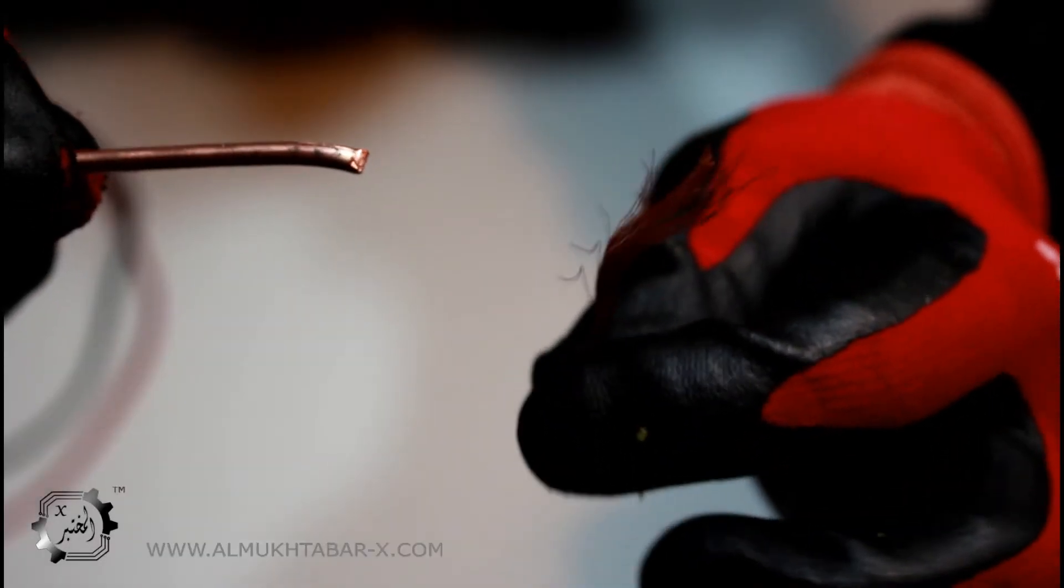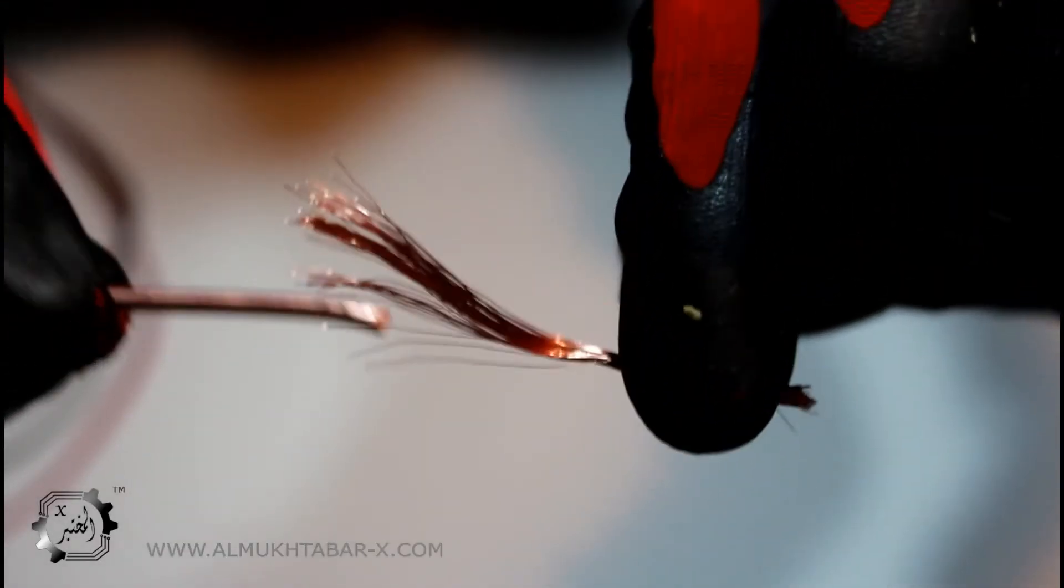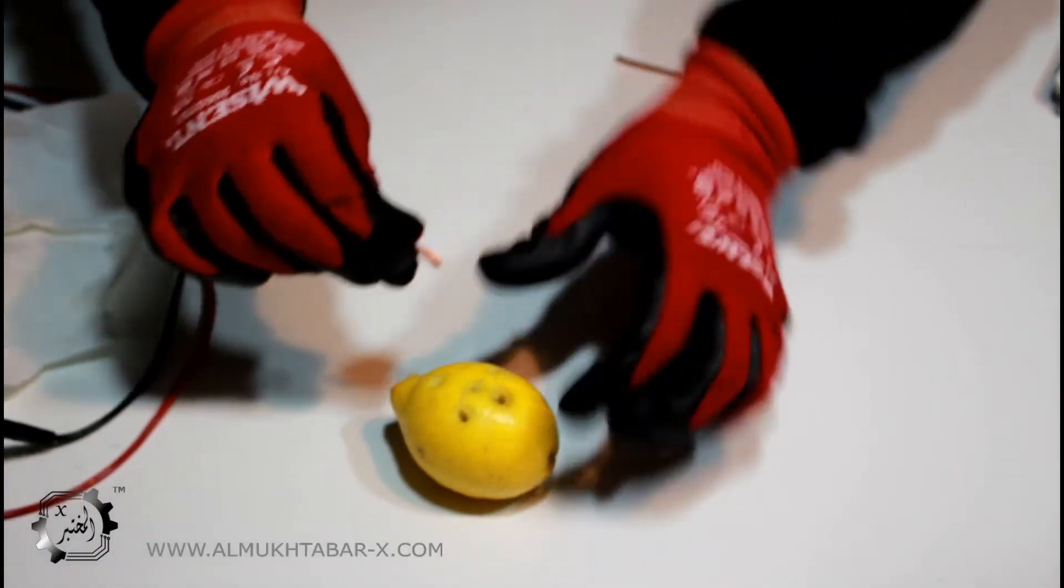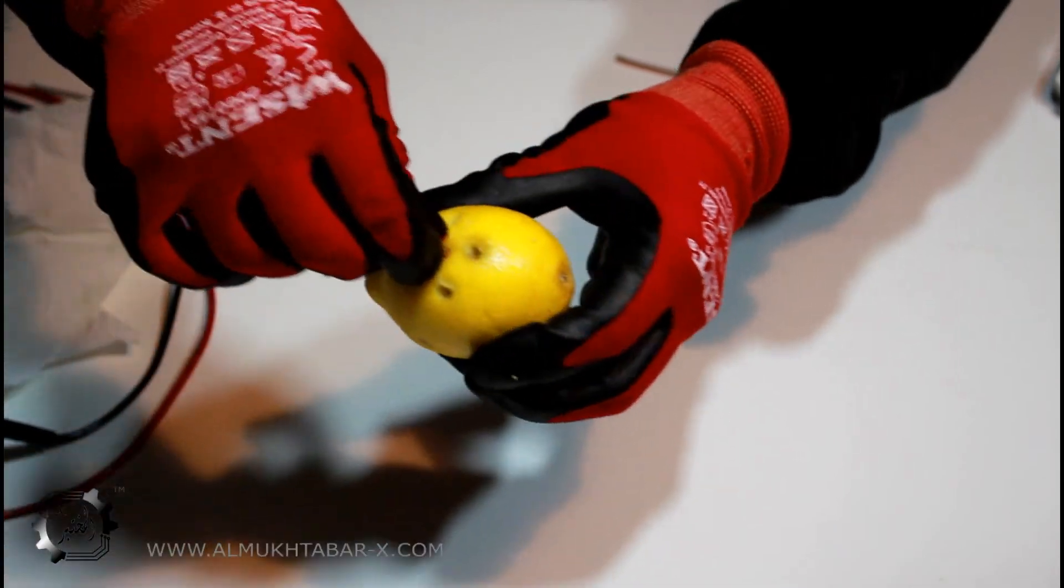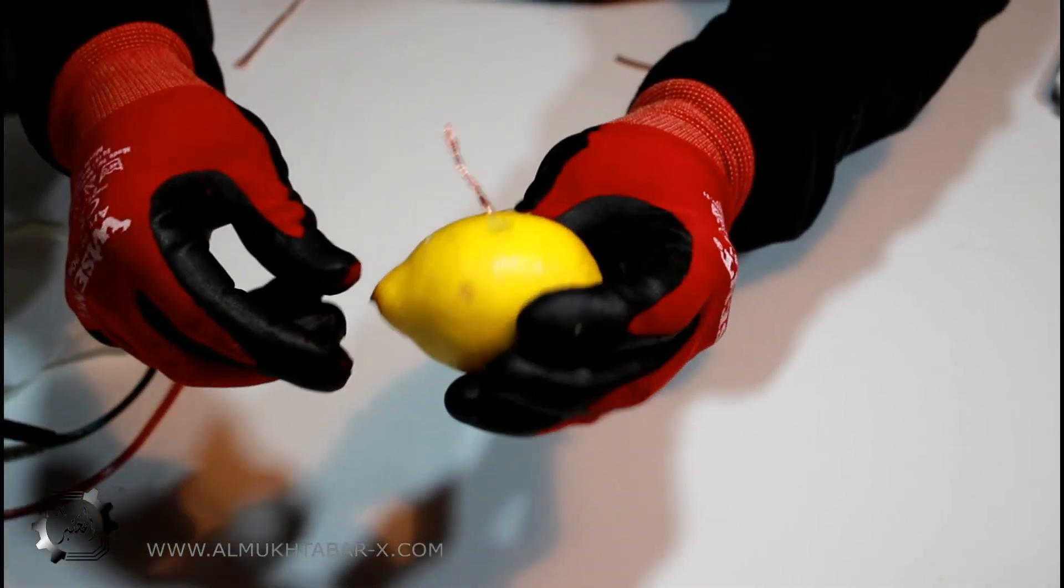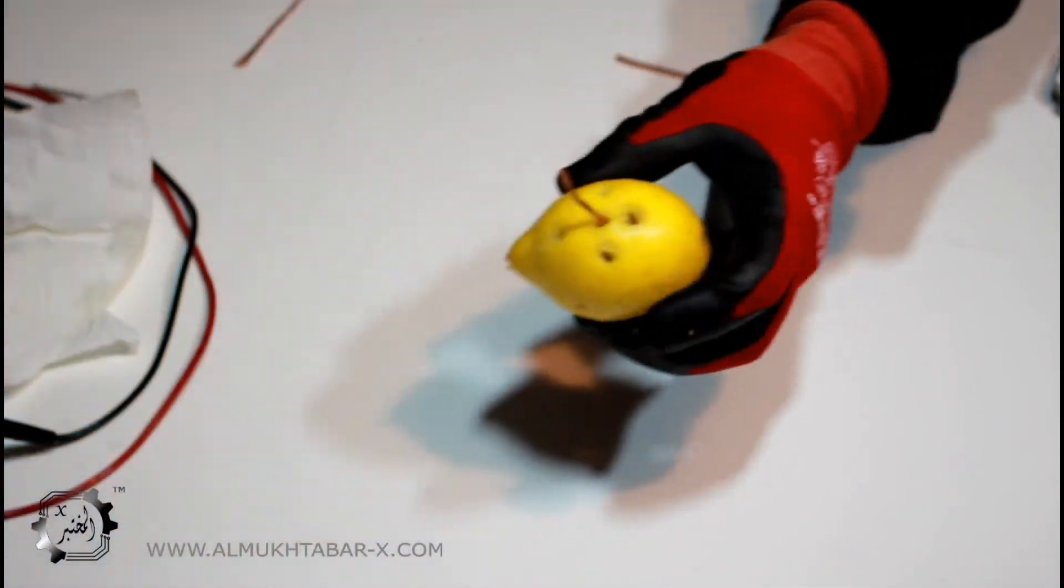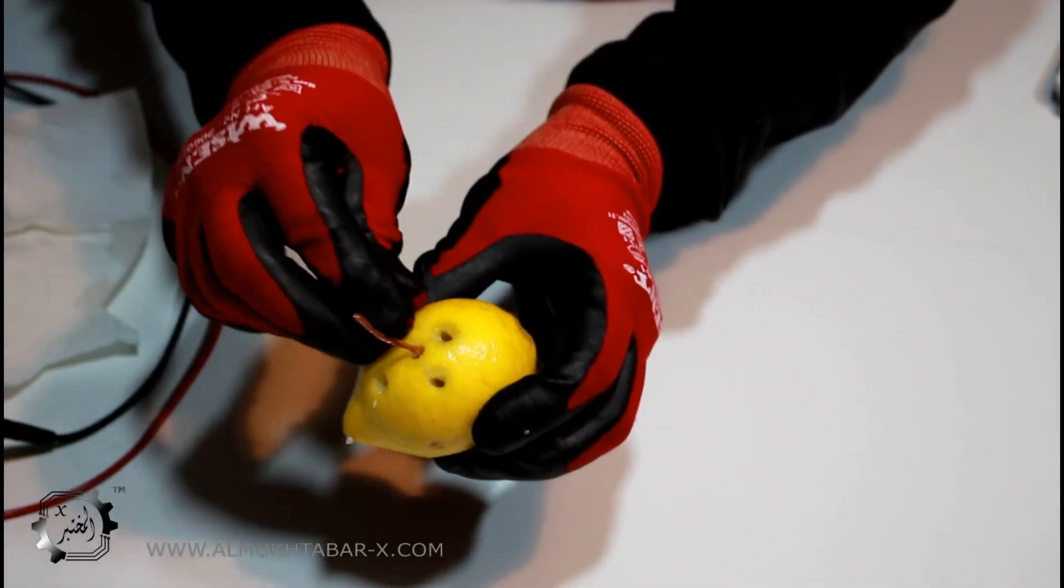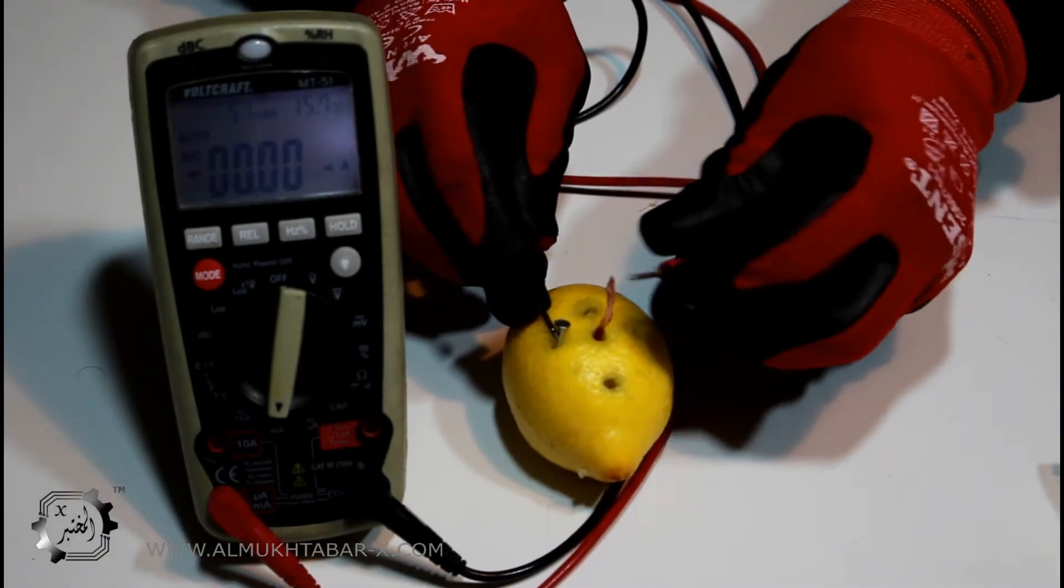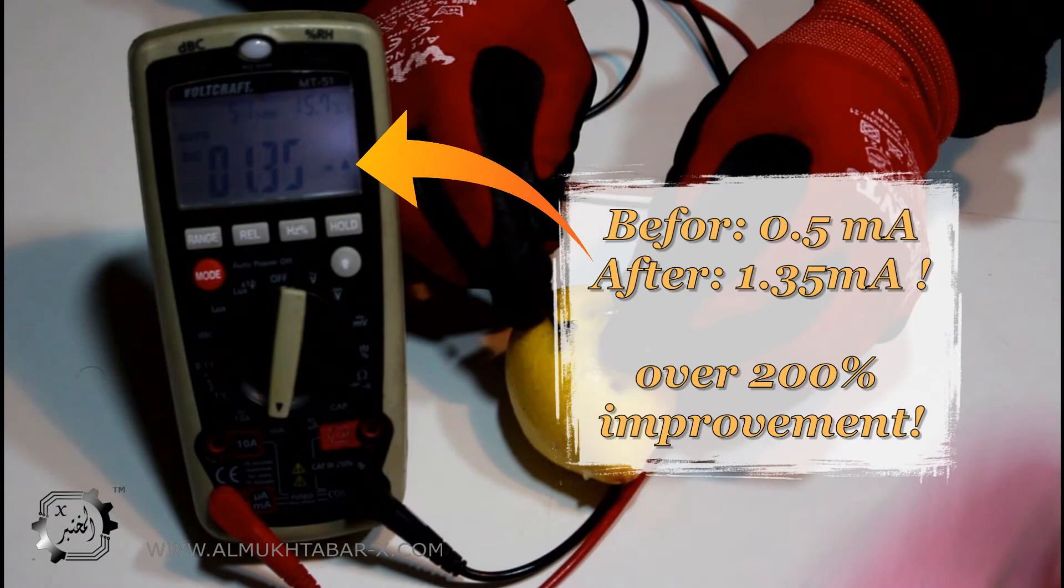Let's try using a stranded copper wire instead of a one single wire. Now insert the stranded wire into the lemon. The measuring shows an increase in the current of more than 200 percent.